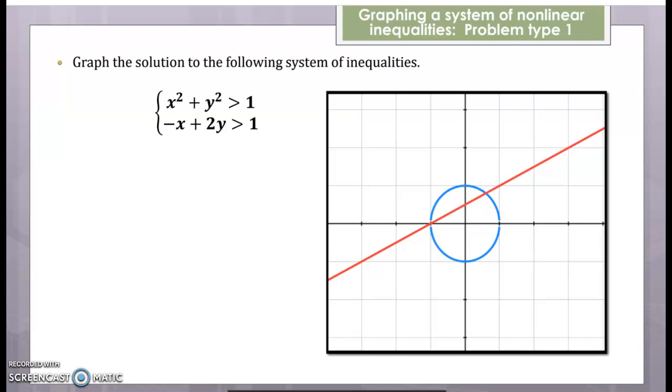If I take a look at this first inequality, this is a circle, this is the equation of a circle. It's centered at 0, 0 and has a radius of 1. This greater than without the equal to indicates it's dashed.